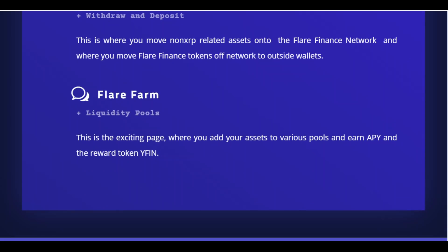Moving on to Flare Farm. This is probably the least risky product because you only need to put in one asset, and there's very high APY. In the Flare Farm liquidity pools, you put in FXRP and mine YFIN, which is the main governance token on Flare Finance. There are only 11,000 YFIN tokens and they can only be obtained by farming them out of Flare Farm. On Flare X, if you put in two tokens you get an LP token, which you then take to Flare Farm for higher APYs — but with more risk.